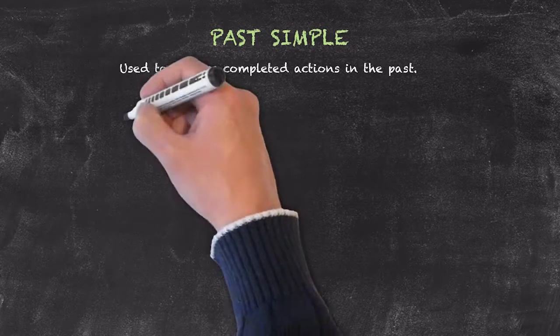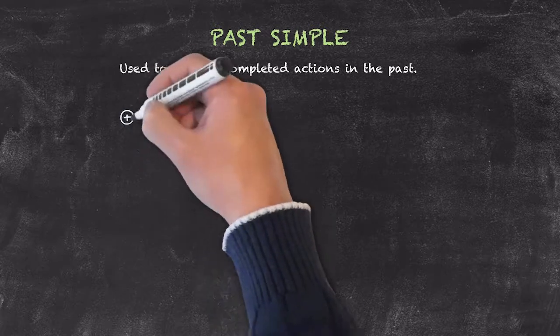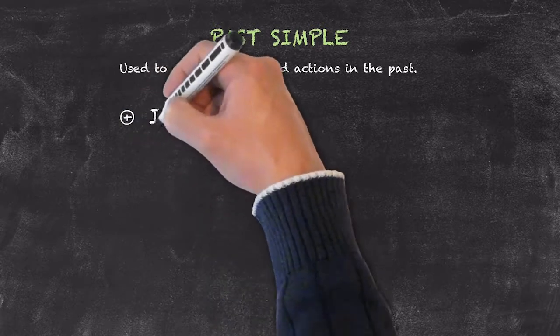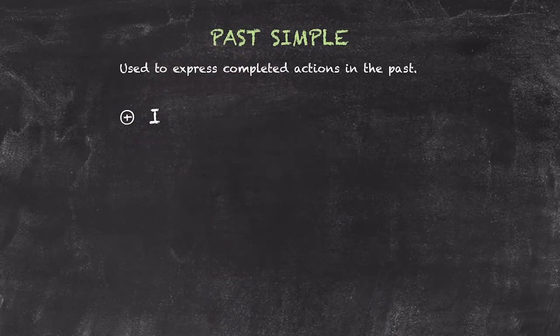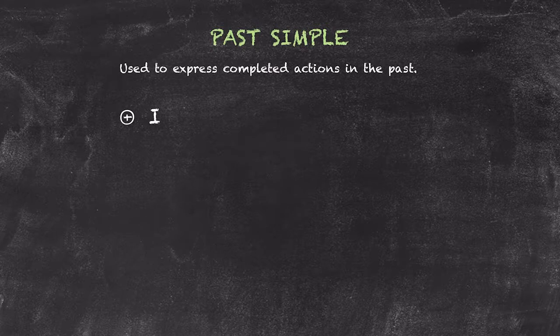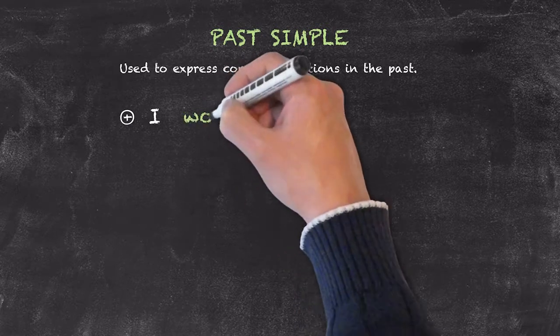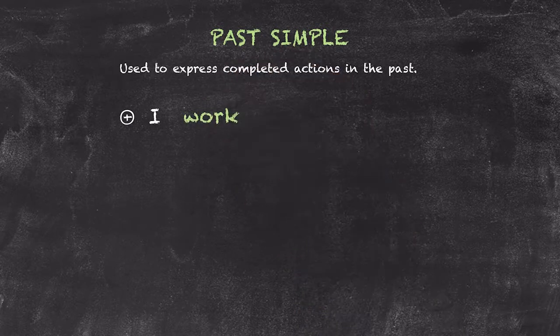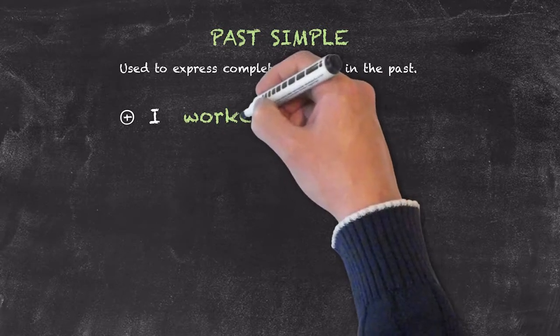To make positive sentences, we have our subject, and the subject could be anything from I, you, we, they, it, he, she. And now we conjugate. We change our verb, most often by adding ed.